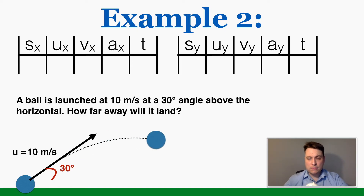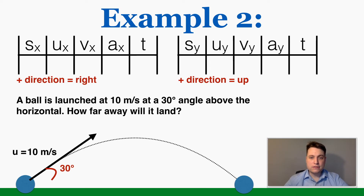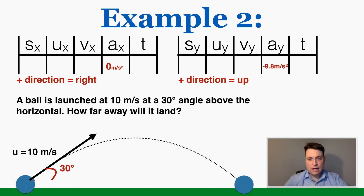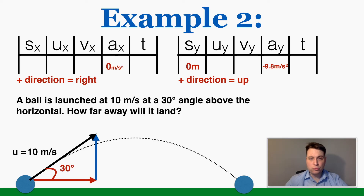Example two: a ball is launched at 10 meters per second at a 30-degree angle above the horizontal. How far away will it land? I'll call rightward positive on the x-axis and upward positive on the y-axis. The x acceleration is 0 and the y acceleration is −9.8 m/s² since down is negative. The initial velocity has both x and y components, found using trig. Also, since the ball lands at the same height it started, the total y displacement is 0 meters.